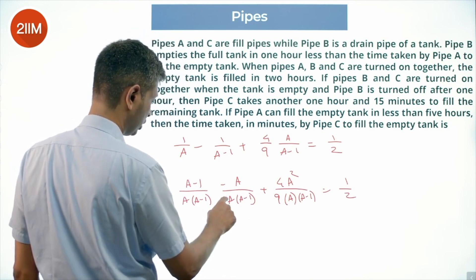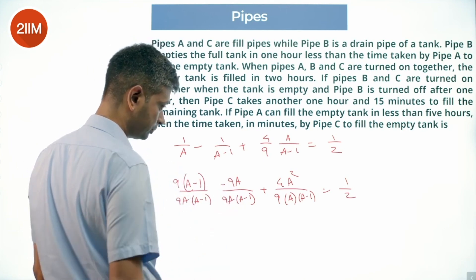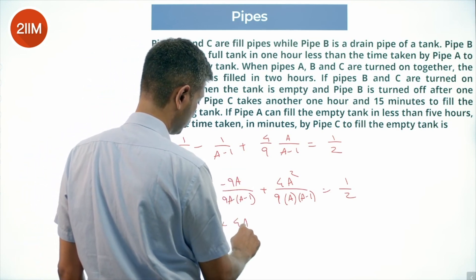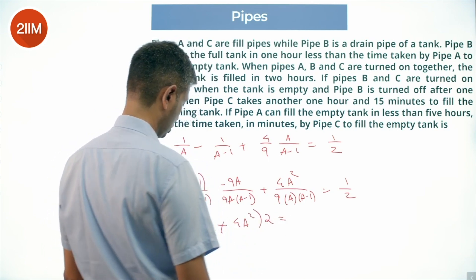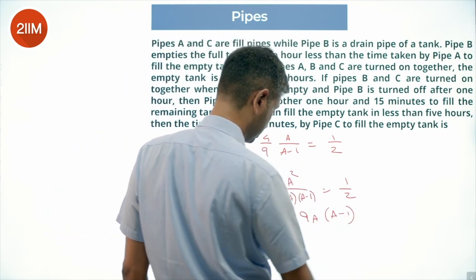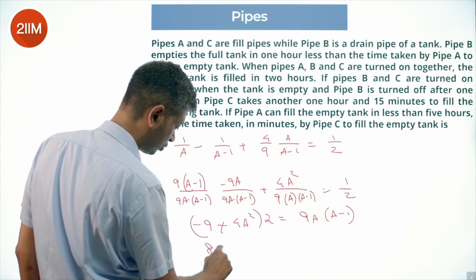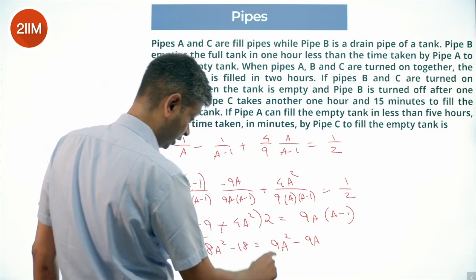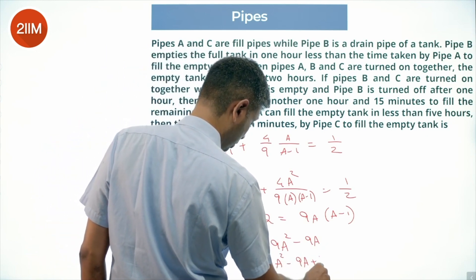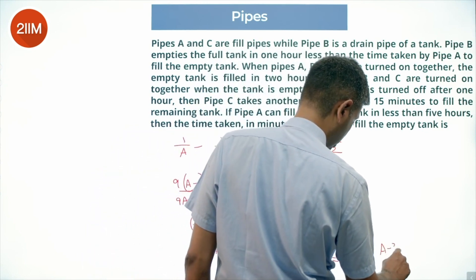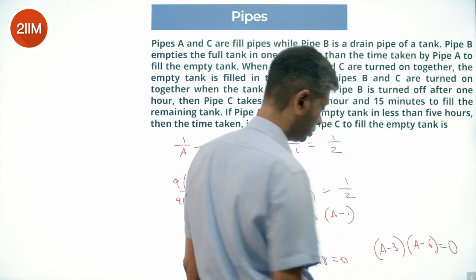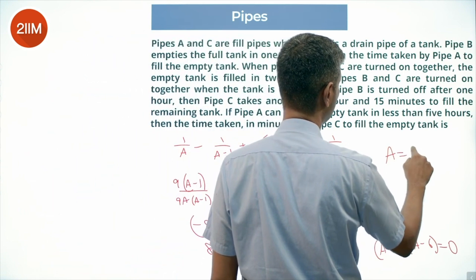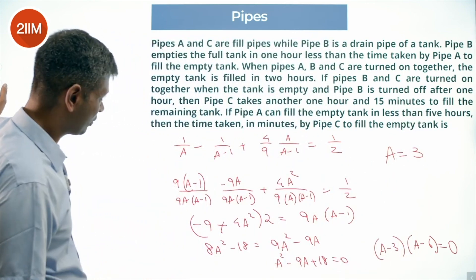Multiplying through by 9·A·(A-1): 9(A-1) minus 9A disappears, leaving minus 9, plus 8A squared equals 9A(A-1). This simplifies to 8A squared minus 18 equals 9A squared minus 9A, giving A squared minus 9A plus 18 equals 0, which factors as (A-3)(A-6) equals 0. So A equals 3 or A equals 6. Since the question states A fills the tank in less than 5 hours, A must equal 3 hours.